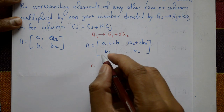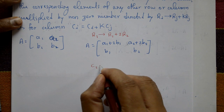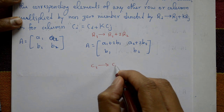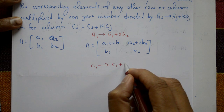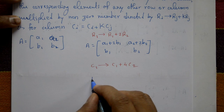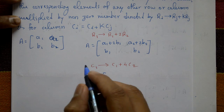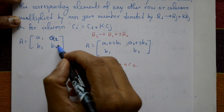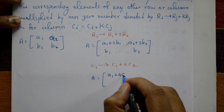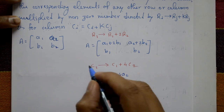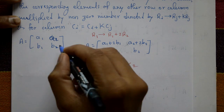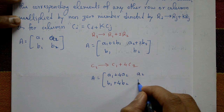Column-wise: c1 is equal to c1 plus 4 times c2. Multiply column c2 by 4 and add it to c1. The first column becomes a1 plus 4a2 and b1 plus 4b2. The second column remains the same: a2, b2.